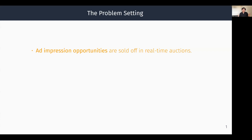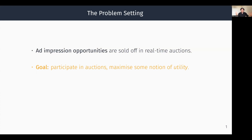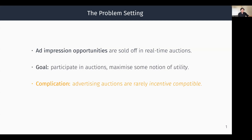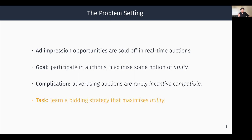As I'm sure many of you are aware, opportunities to show ads online are typically sold off in real-time auctions these days. The goal for an advertiser is to participate in those auctions in an attempt to maximize some notion of utility. Now, advertising auctions are rarely incentive compatible, so bidding truthfully is not going to be an optimal strategy. Thus, a new task arises where we want to learn a bidding strategy that maximizes utility — and ideally, we'd want to learn this from data.